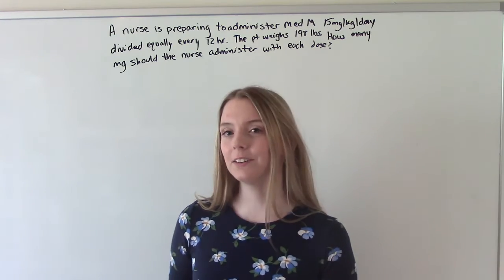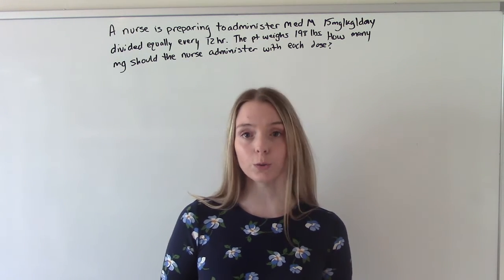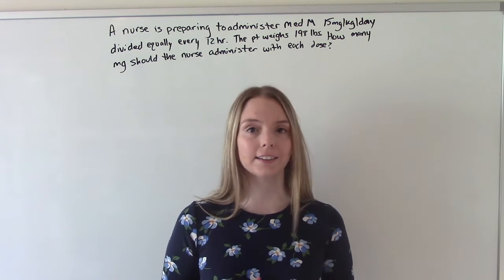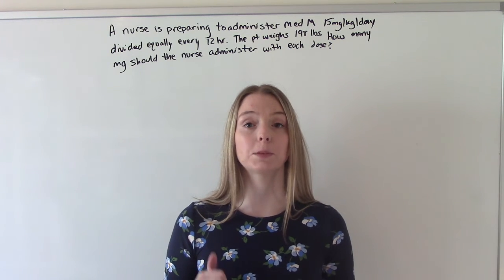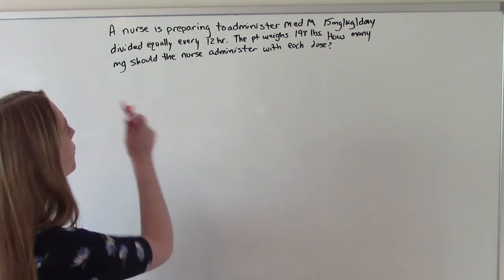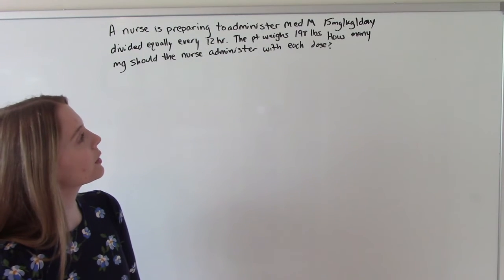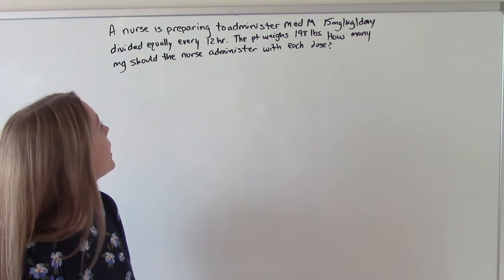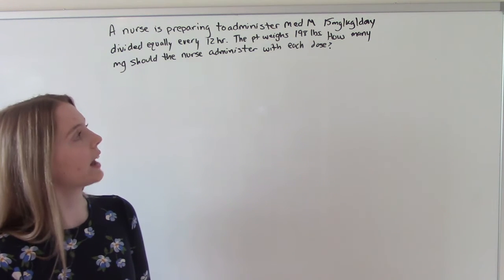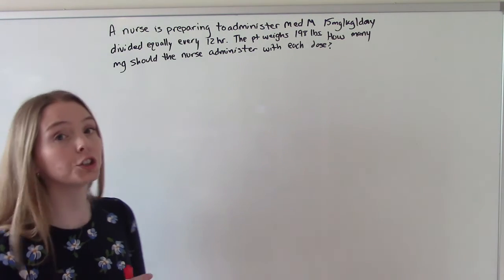This next one is a little bit different, because up until this point we've been doing milligrams per kilogram per dose, and the dose has been kind of implied at the end. In this one it's not, because we're doing milligrams per kilogram per day. So let's jump into it and see if we can figure it out. The nurse is going to administer medication M, 15 milligrams per kilogram per day. This is divided equally every 12 hours. The patient weighs 198 pounds. How many milligrams should the nurse administer with each dose?